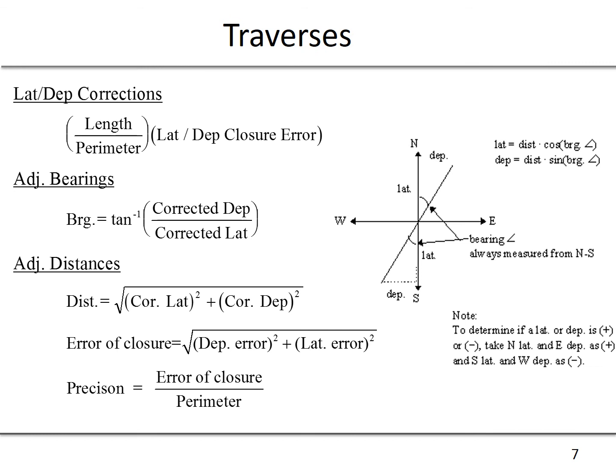We can use a number of calculations to work around a traverse calculating our latitude and departure. Latitude is the north or south component. We use the equation: the distance multiplied by the cosine of the bearing. It's important that the signs do matter while we're dealing with latitudes and departures. We need to make sure we have the appropriate sign: positive for north and positive for east, and negative for south and west movements.